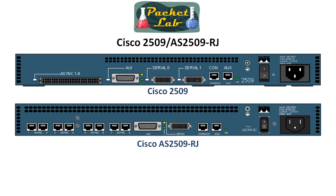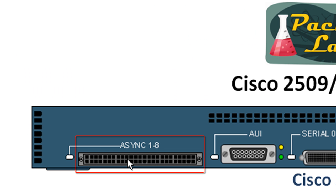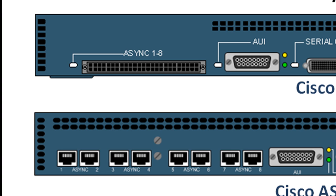We have a number of Cisco-based options for our access server. First, let's look at the 2509 series. The top device here is a 2509 — it's a 2500, so it is a fixed module router. The bottom is the Cisco AS2509 RJ — RJ being registered jack. The most significant difference between these two devices is how the async ports are presented. The 2509 uses a SCSI 68-pin connector where you connect an octal cable — one end is that big 68-pin SCSI connector, and off of that it has eight dedicated connections terminating with RJ45 connectors that go into the console port. With the AS2509 RJ, each async port has its own dedicated connection that takes an RJ45 directly, so you can just use rollover cables with RJ45 on each end.